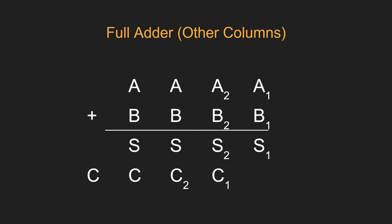and then A2, B2, S2, C2, all the way along right through to the end. Now, I'm only going to use four bits, but you can use as many as you like, depending on the size of the numbers that you're adding together.